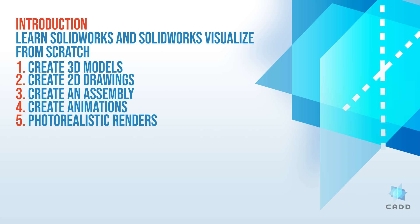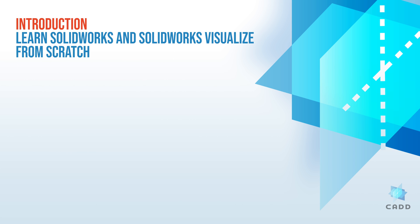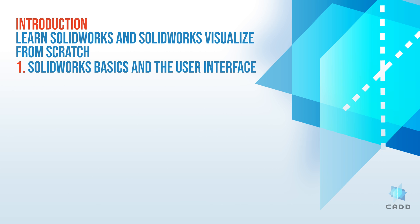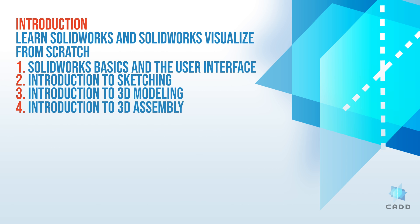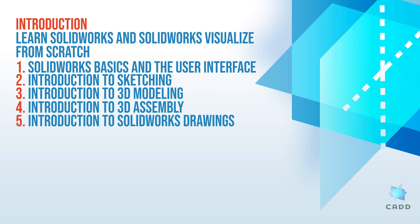To summarize what you will learn in this course: in section 1 we are going to learn about the SOLIDWORKS basics and its user interface. Then we will dive right in and learn how to create sketches in section 2. After that, we are going to learn how to use our sketch to create 3D models in section 3. Then in section 4, we will learn how to create a 3D assembly from our 3D models. Next, we will learn how to create 2D drawings in section 5.